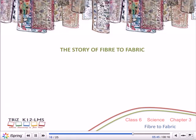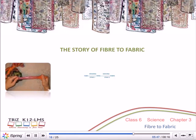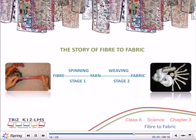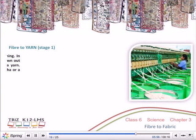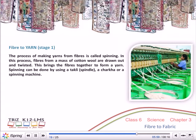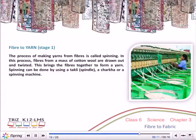The Story of Fibre to Fabric — Stage 1, Fibre to Yarn: The process of making yarn from fibres is called spinning. In this process, fibres from a mass of cotton wool are drawn out and twisted, bringing the fibres together to form a yarn. Spinning can be done using a takli or spindle, a charkha, or a spinning machine.